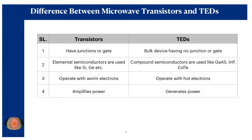For the transfer electron device, it is a bulk device having no junction or gate. The GAN diode, which falls in the category of transfer electron devices, is a semiconductor device having no junction — it is a bulk semiconductor device. This is the major difference between the transistor and the transfer electron device in terms of their physical construction. For transistors, elemental semiconductors such as silicon and germanium are used, whereas for transfer electron devices, compound semiconductors are used such as gallium arsenide, indium phosphide, or cadmium telluride.